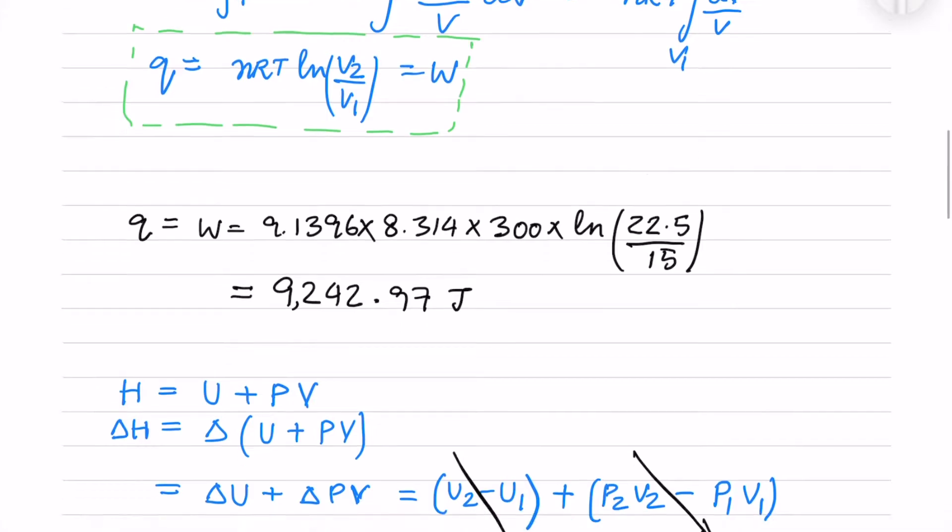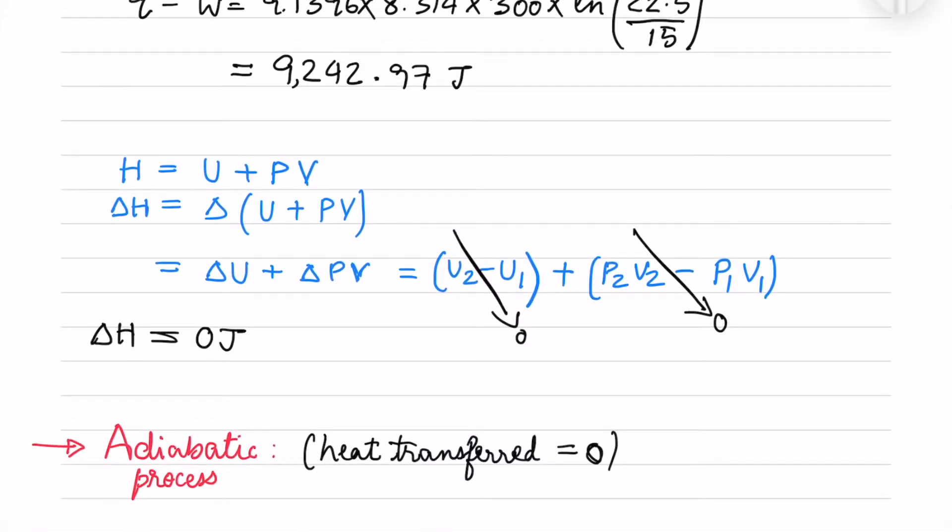For the change in enthalpy, delta H equals delta U plus delta PV. Since U2 minus U1 is 0, and P2V2 minus P1V1 equals nR(T2 - T1) which is also 0, the change in enthalpy is 0 joules.